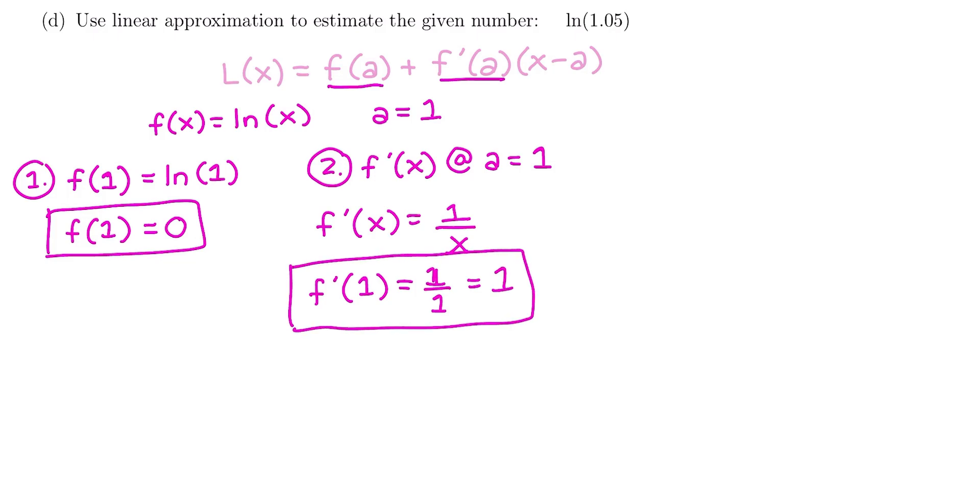So we have our two components. We have f of a and f prime of a. We're ready to build our function in the third step. L of x is going to be f of a, which was 0, plus f prime of a, which was 1, times x minus our a, which was also 1.